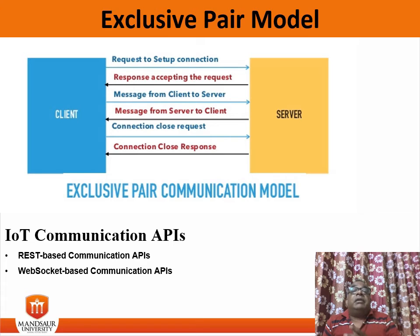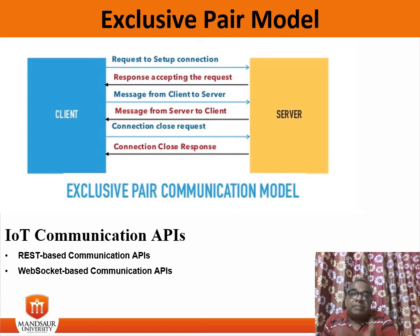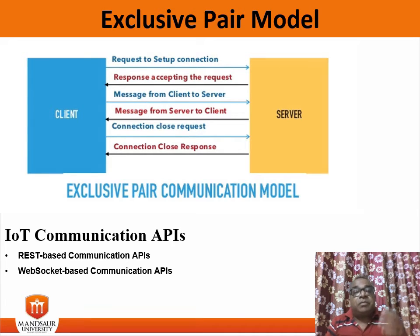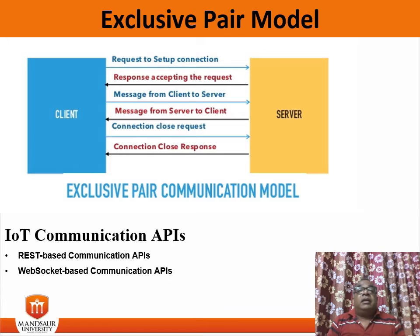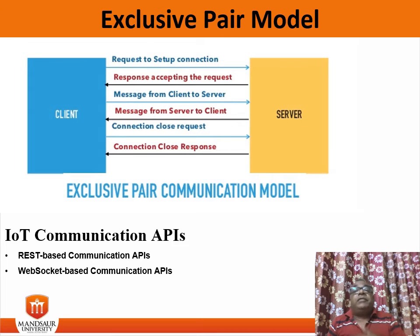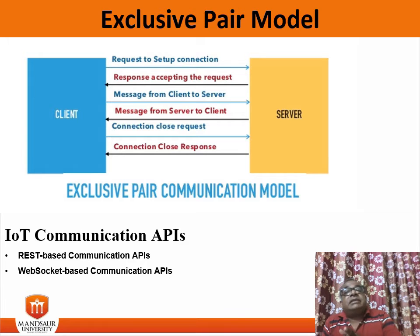The next constraint is cacheable. The cache constraint requires that data within the response to a request be implicitly or explicitly labeled as cacheable or non-cacheable. If a response is cacheable, then the client cache is given the right to reuse the response data for later equivalent requests. Caching can partially or completely eliminate some interactions and improve efficiency and scalability.